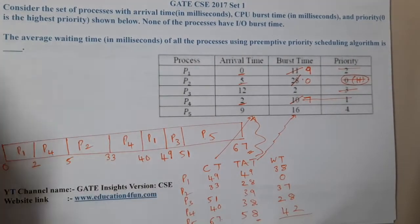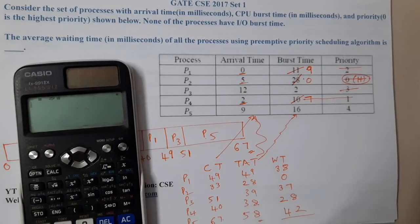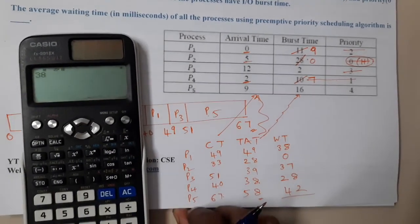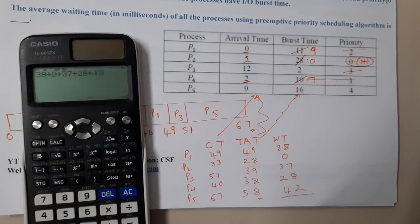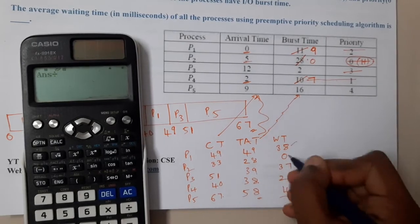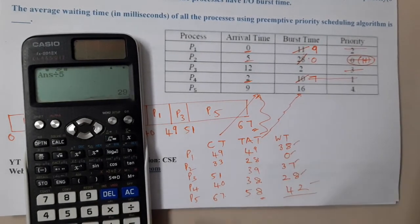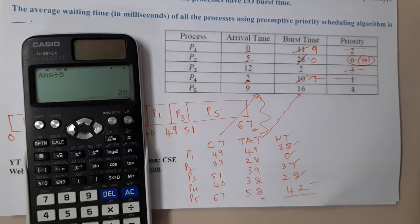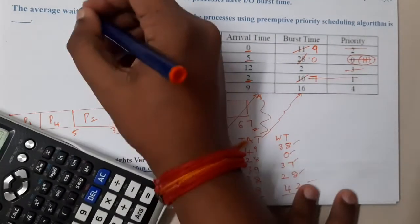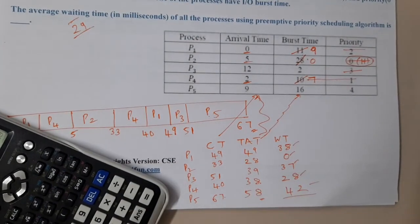Average waiting time = (38 + 0 + 37 + 28 + 42) / 5 = 29. After cross-checking, 29 is the correct answer. It's a straightforward and direct question, though the calculations can be a bit confusing and prone to silly mistakes.